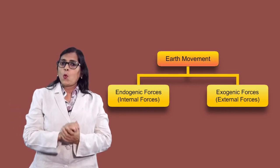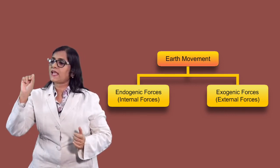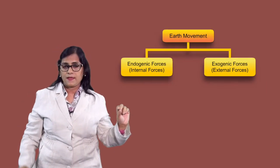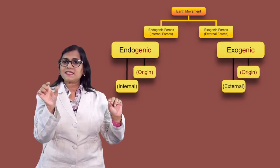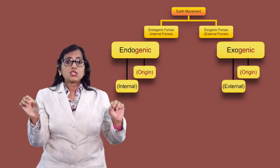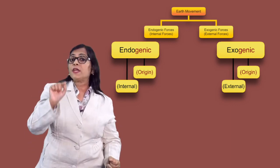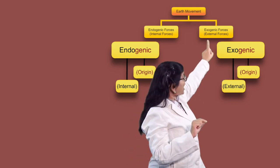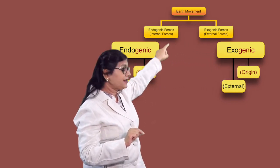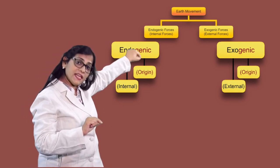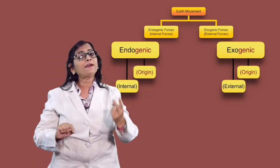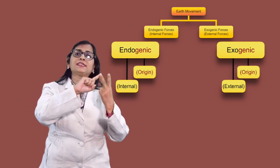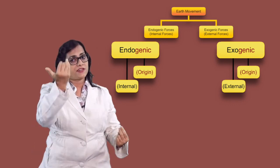When we talk about exterior forces and interior forces, we first need to know what they are termed as. The word 'genic' means origin. So based on the origin of the forces: 'exo' means exterior and 'endo' means interior or internal forces. We have exogenic forces acting from the exterior and endogenic forces acting from the interior of the crust.